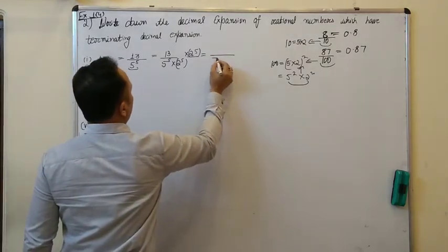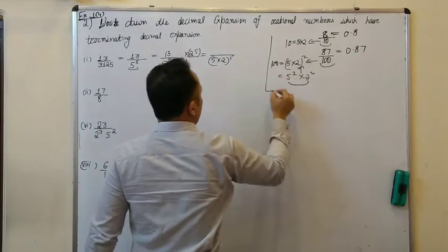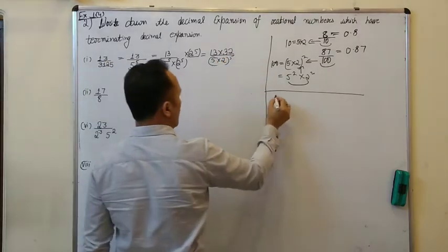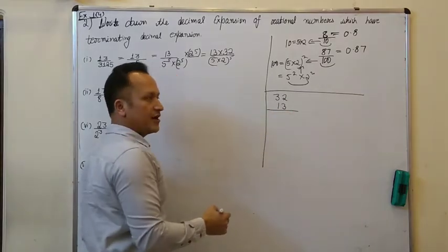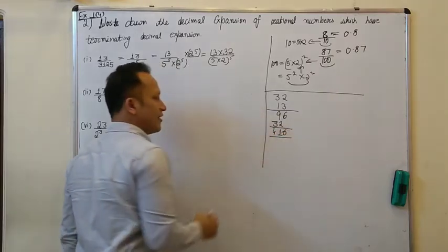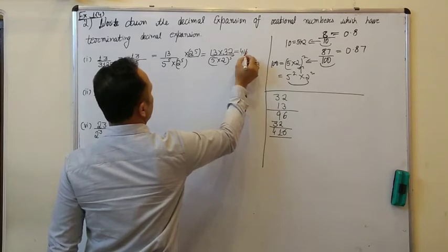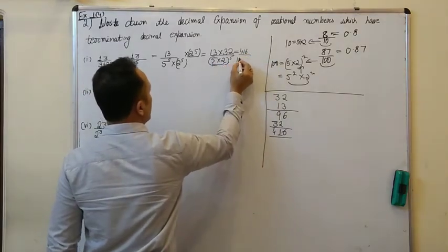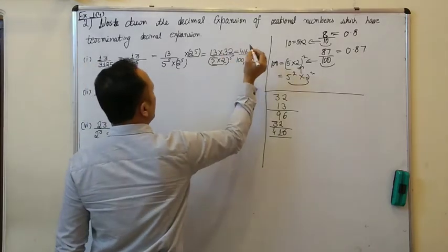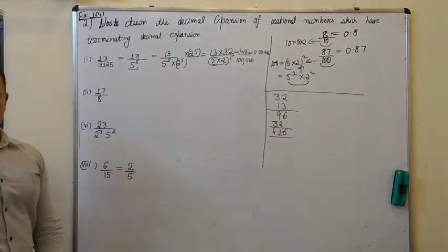Ab check kariye. Denominator is now five into two, whole power five. What about numerator? Think of numerator, it is 13 into 32. Aakko kya karna hai? Sirf 32 ko 13 se multiply karke rakhna hai. It would be 416. So numerator is 416, denominator mein 10 five times — five zeros. So iska decimal form hai 0.00416.